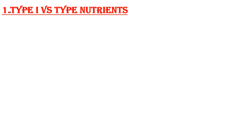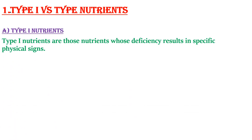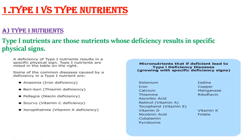Type 1 nutrients are those whose deficiency results in specific physical signs. For example, iron deficiency can cause anemia, thiamine deficiency causes beriberi, niacin deficiency causes pellagra, vitamin C deficiency causes scurvy, and vitamin A deficiency causes xerophthalmia. A deficiency of type 1 nutrients results in a specific physical sign.